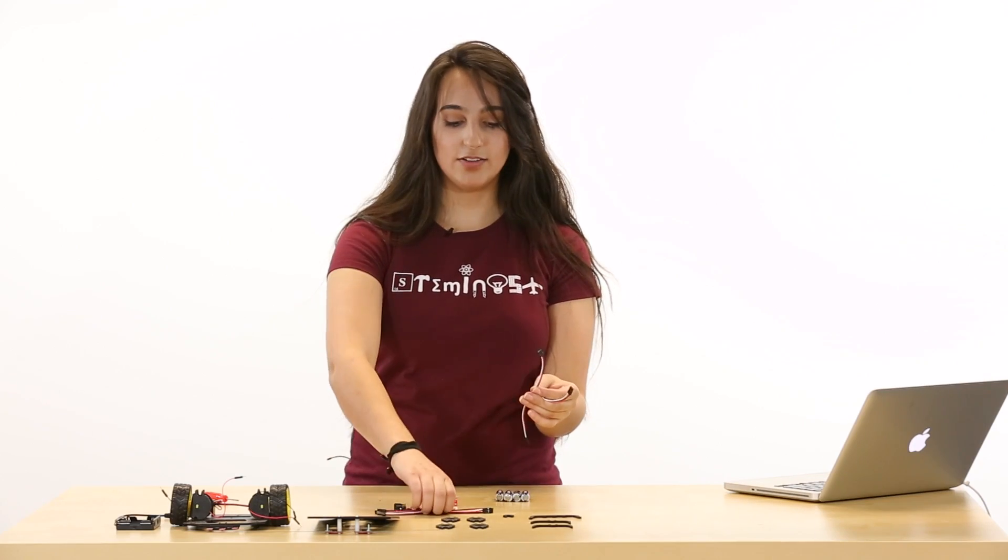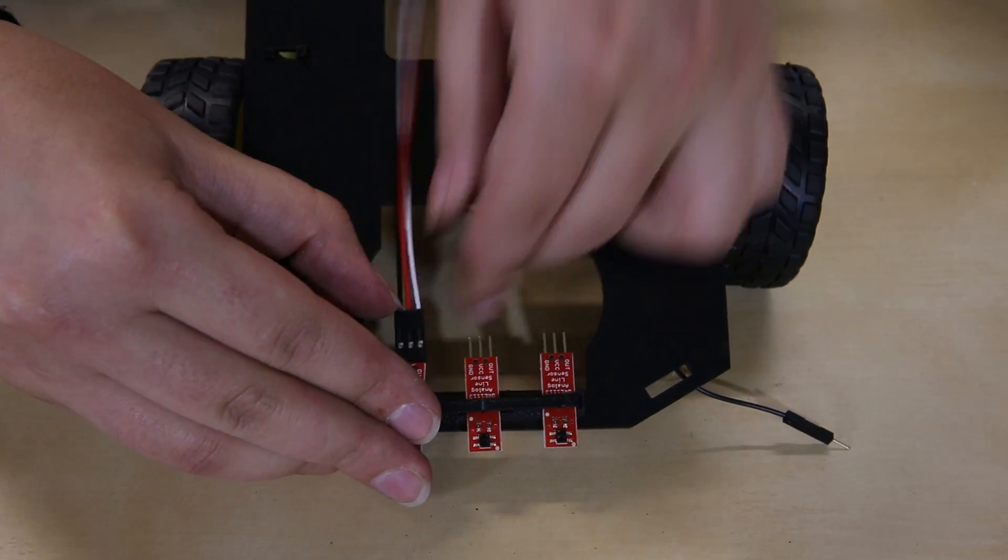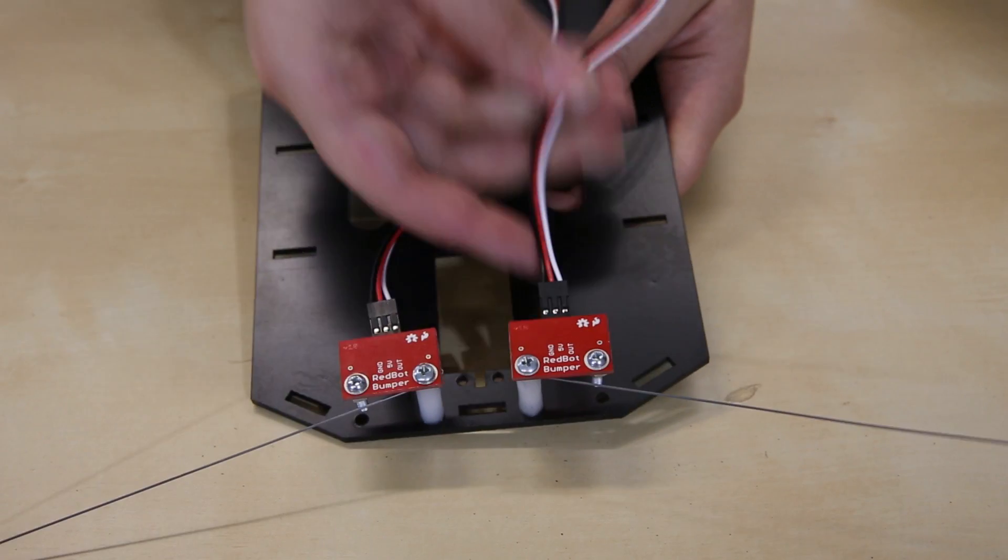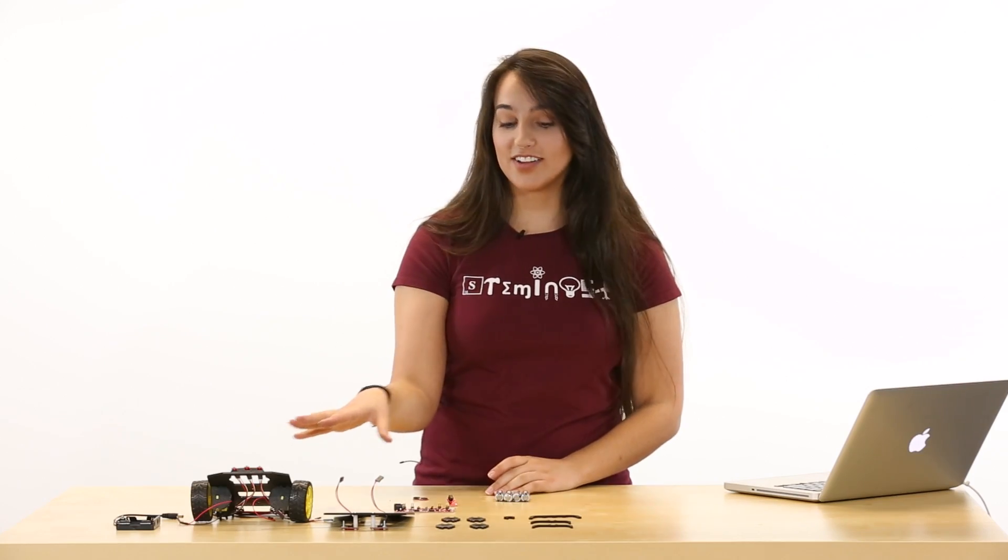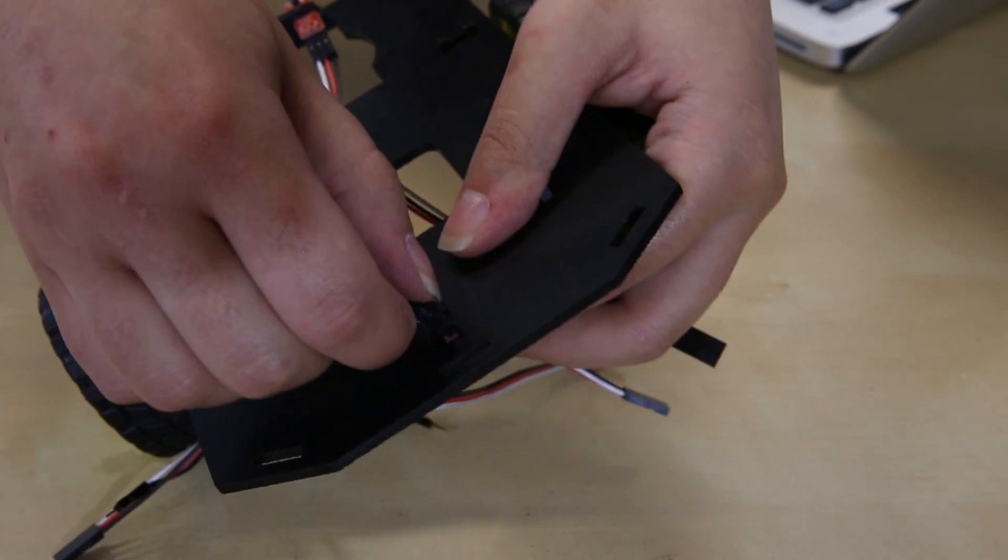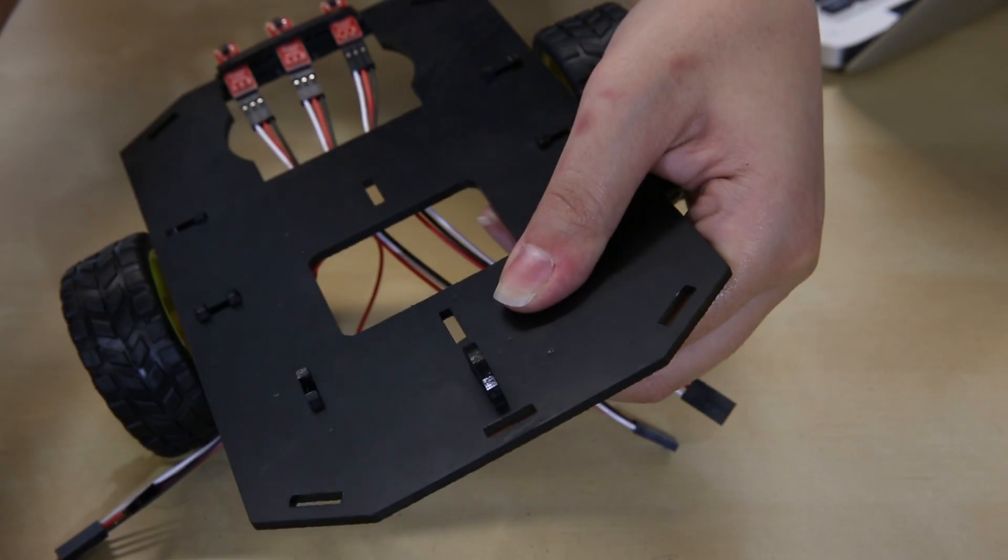Now we're just going to connect all five of our three wire jumper cables. These three will be going to our line sensors. These two will be going to our bumper sensors. Now that we've got all of that wired up, we can take our little stabilizer and we can go ahead and put that right into the bottom plate. It just snaps right in.